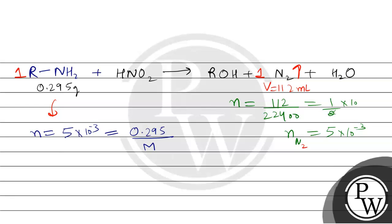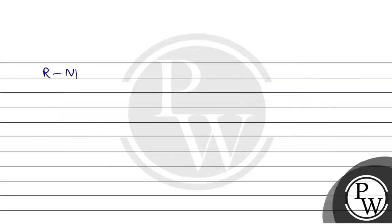Solving for molecular weight: molecular weight = 0.295 / (5 × 10⁻³) = 59. Now we know MW = 59. For RNH₂, the molecular weight = weight of R group (x) + 14 (nitrogen) + 2 (H₂) = x + 16. So x + 16 = 59, giving x = 43. The R group has a weight of 43.